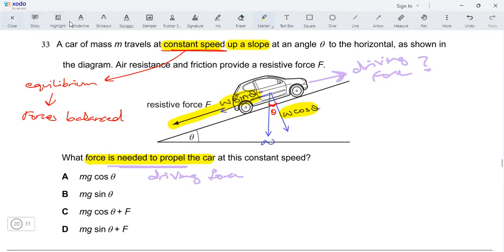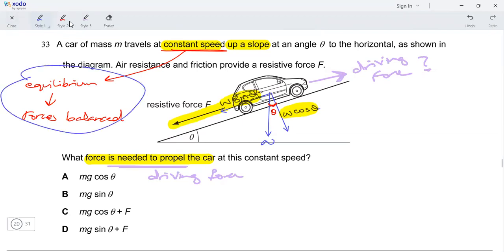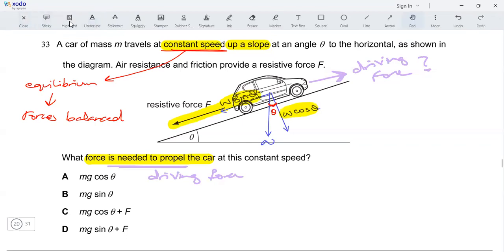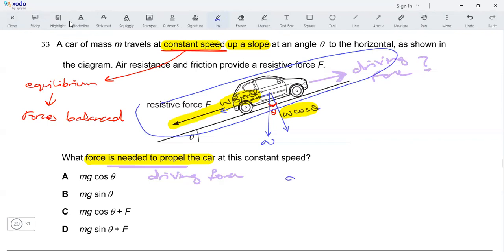Now, moving back towards equilibrium. The car is in equilibrium, meaning the forces on the car are balanced. So let me consider all the forces along the slope. I can write an equation that the driving force is equal to w sine theta plus the resistive force F.